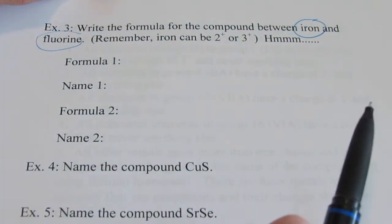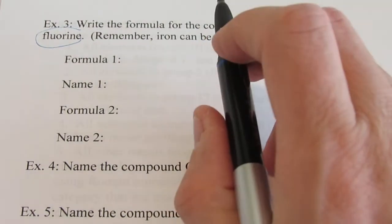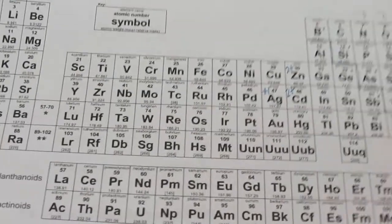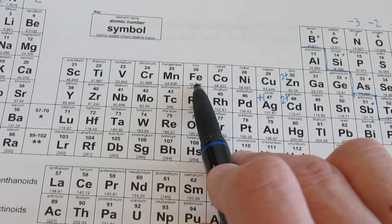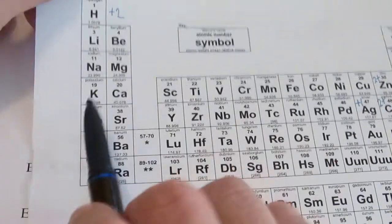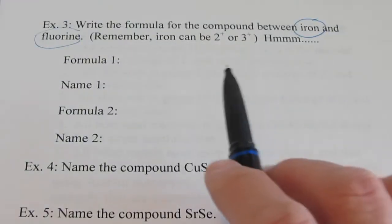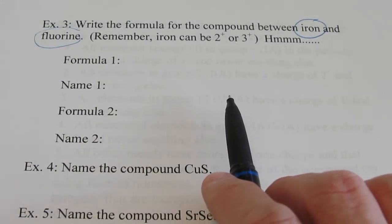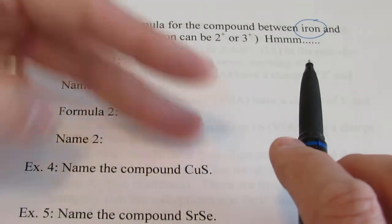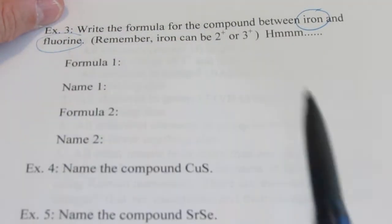Now here's the problem. Iron, if you remember, is one of those transition metals. It's right there in the middle. And to become stable, it can either lose 2 electrons or it can lose a total of 3. So it can be plus 2 or plus 3. That means I can end up with two formulas between iron and fluorine.